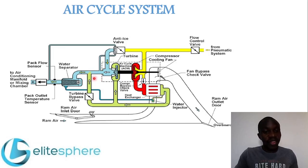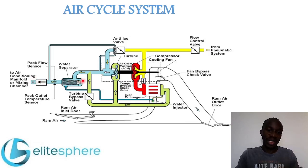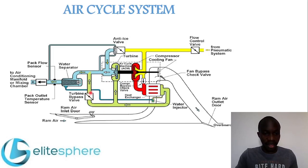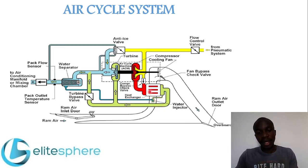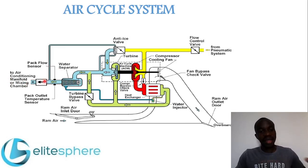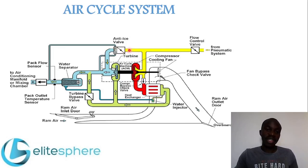In other systems, the mixing of the turbine bypass air and turbine outlet air takes place inside the mixing chamber. This diagram shows the mixing chamber at that point. In most systems, the turbine bypass valve air and the turbine outlet air are mixed in the mixing chamber. The water separator removes moisture from the air, and that water is sprayed to the heat exchanger for further cooling. From the water separator, the air goes to the mixing chamber and then to the cabin. The anti-ice valve supplies hot air to the turbine outlet to prevent freezing.